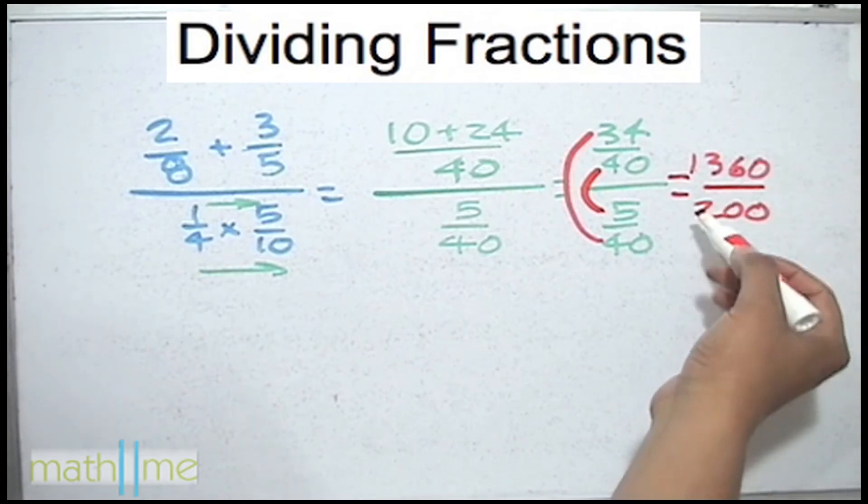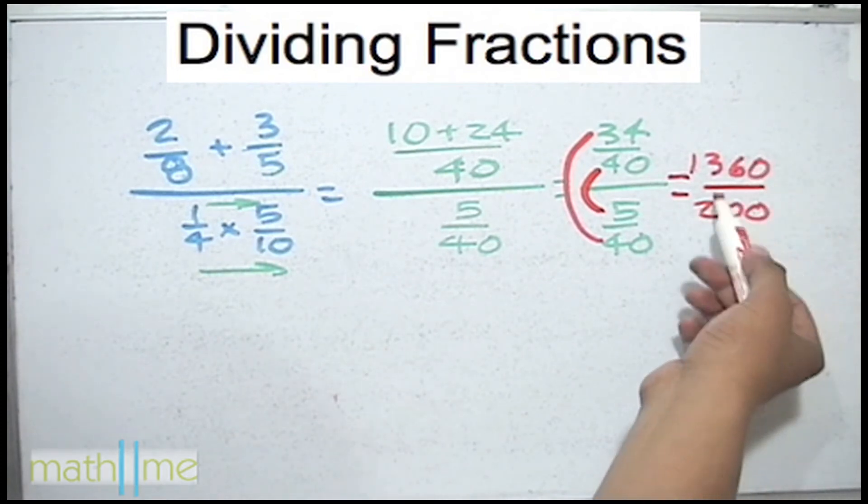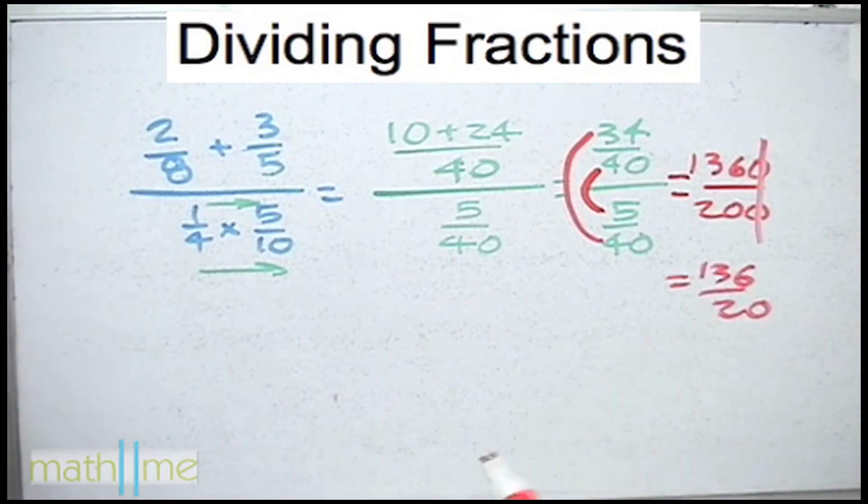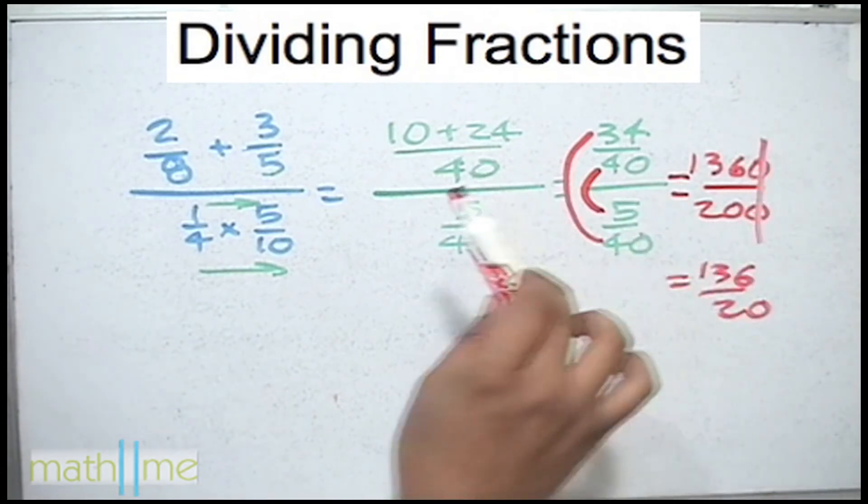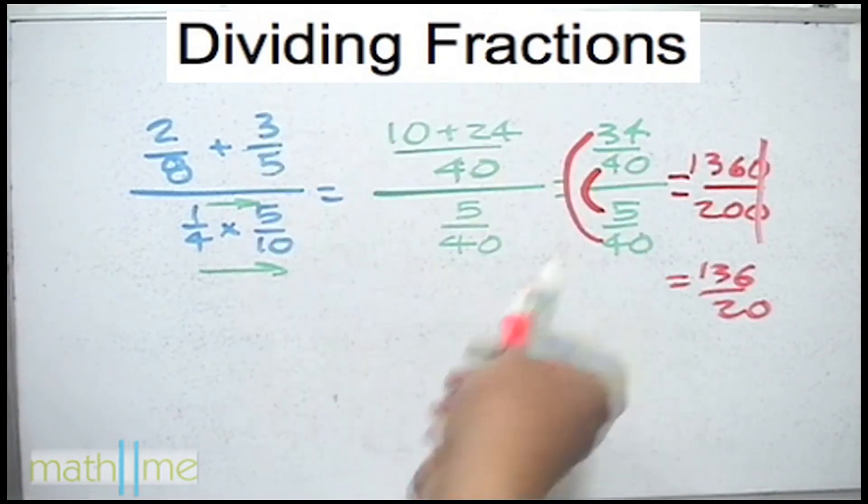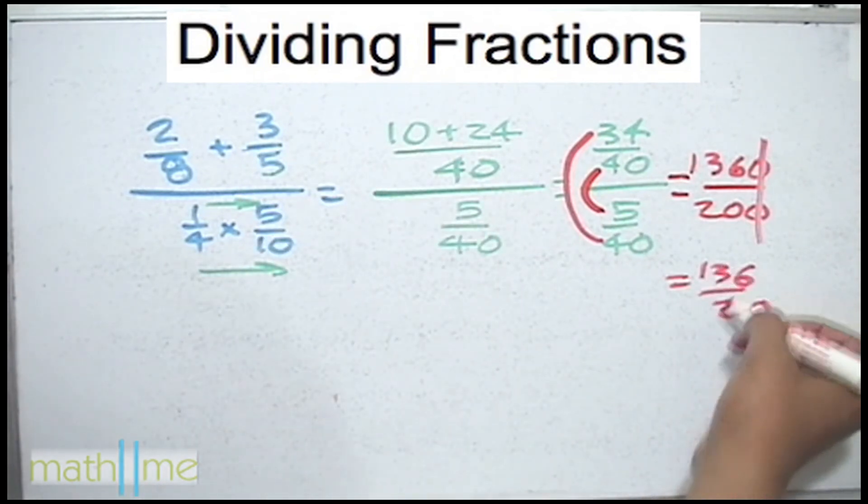If the top and the bottom of the fraction both have a zero in the last digit it can be cancelled so it is better to use 136 over 20. And if we had more zeros just cancel them, that is a little tip. If we want to further simplify then divide each by 2 and continue until you can't go any further.